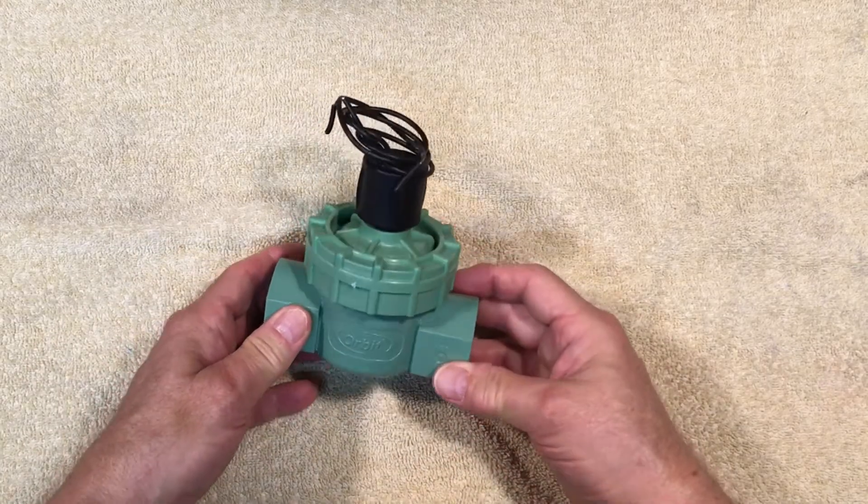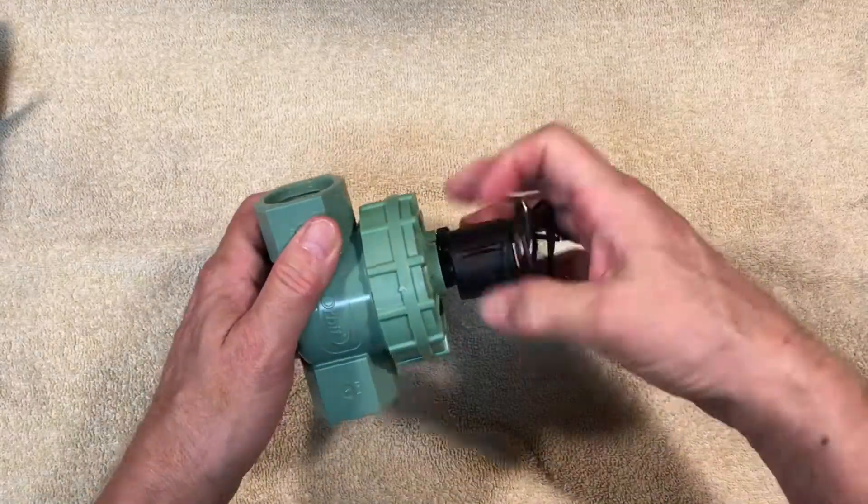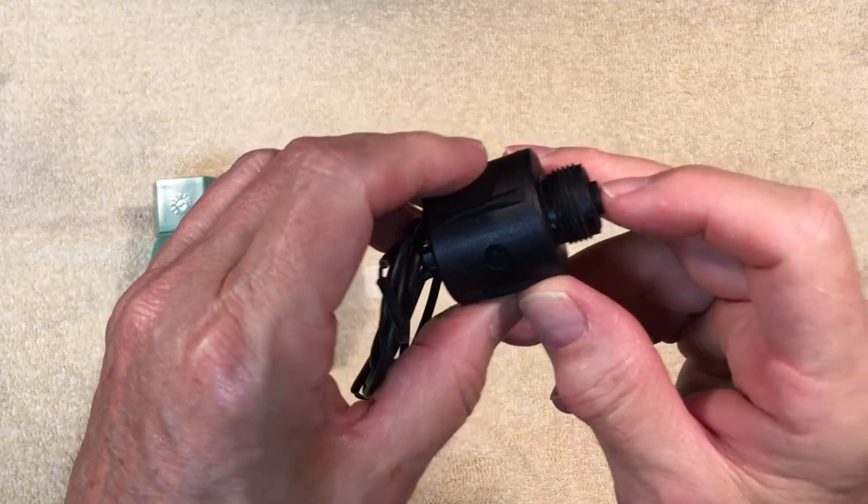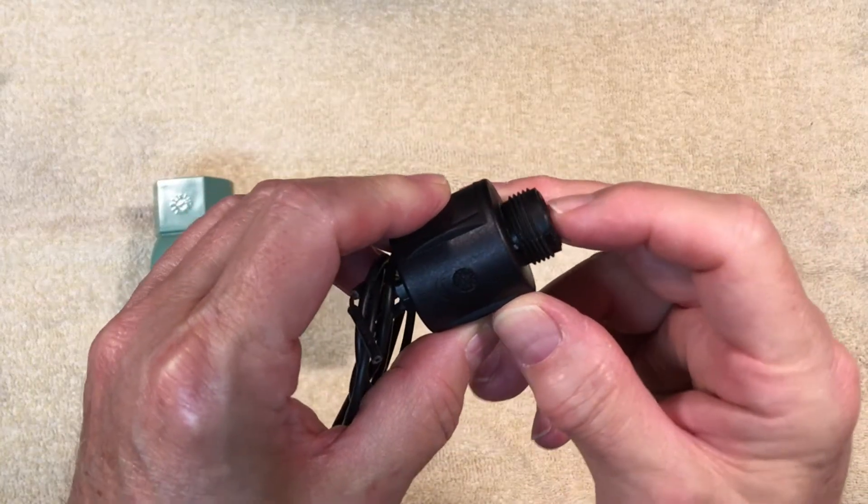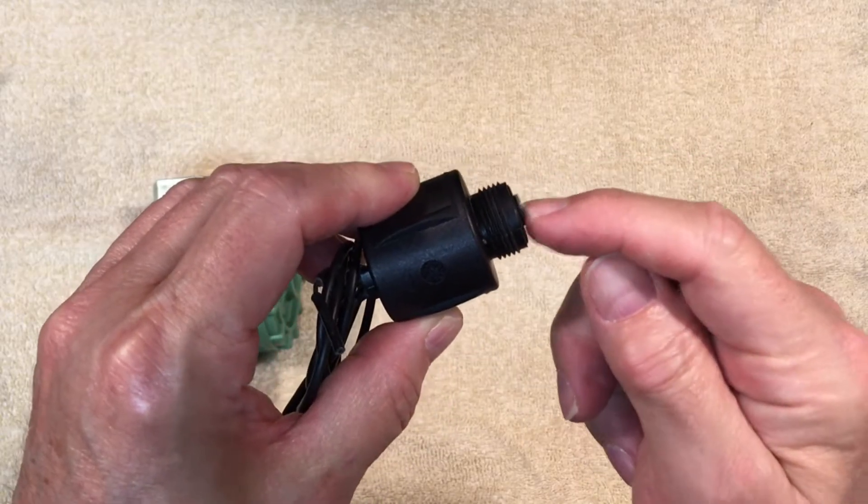There is a solenoid on the top. Let's remove that first. Inside the solenoid is a plunger with a rubberized tip. The solenoid works by energizing an electromagnet within the housing and pulling the plunger back up into the housing.